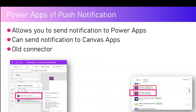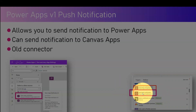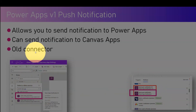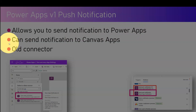In Power Apps you have an option to select a data source and from there you can send a Power Apps push notification. There is also a corresponding connector in Microsoft Power Automate for sending push notifications. There are two versions: Send Push Notification and Send Push Notification V2. For this demo I'll use V1, the classic connector. The Power Apps Notification connector allows you to send a push notification to a canvas app.